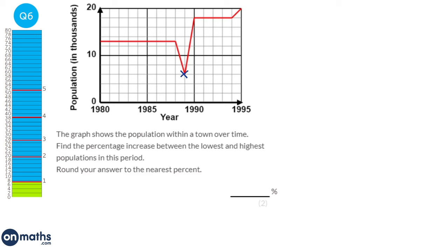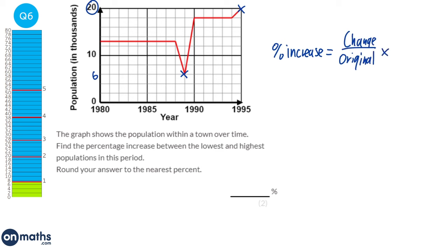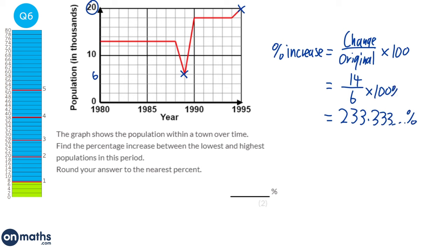The lowest point on this graph is at 6 and the highest point is at 20. We're looking for percentage increase. The formula is change over original times 100. The change between 6 and 20 is 14. The original starting point was 6. So 14 over 6 times 100 gives us 233.33 percent. Rounded to the nearest percent, the answer is 233 percent.